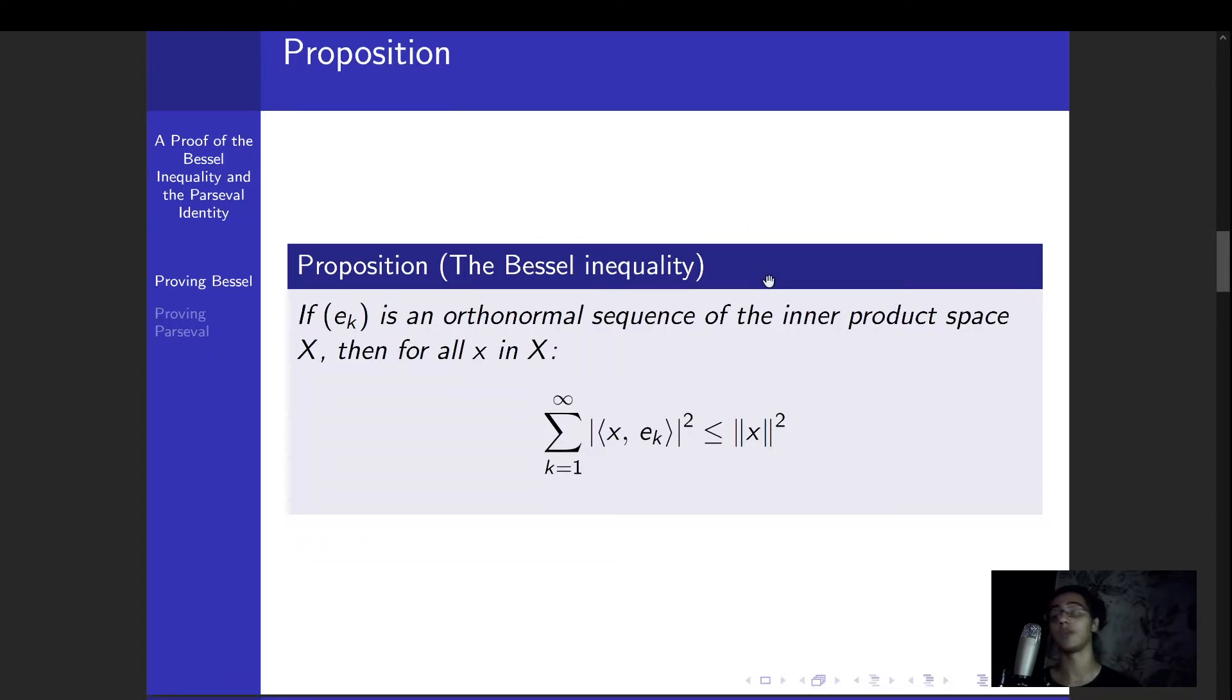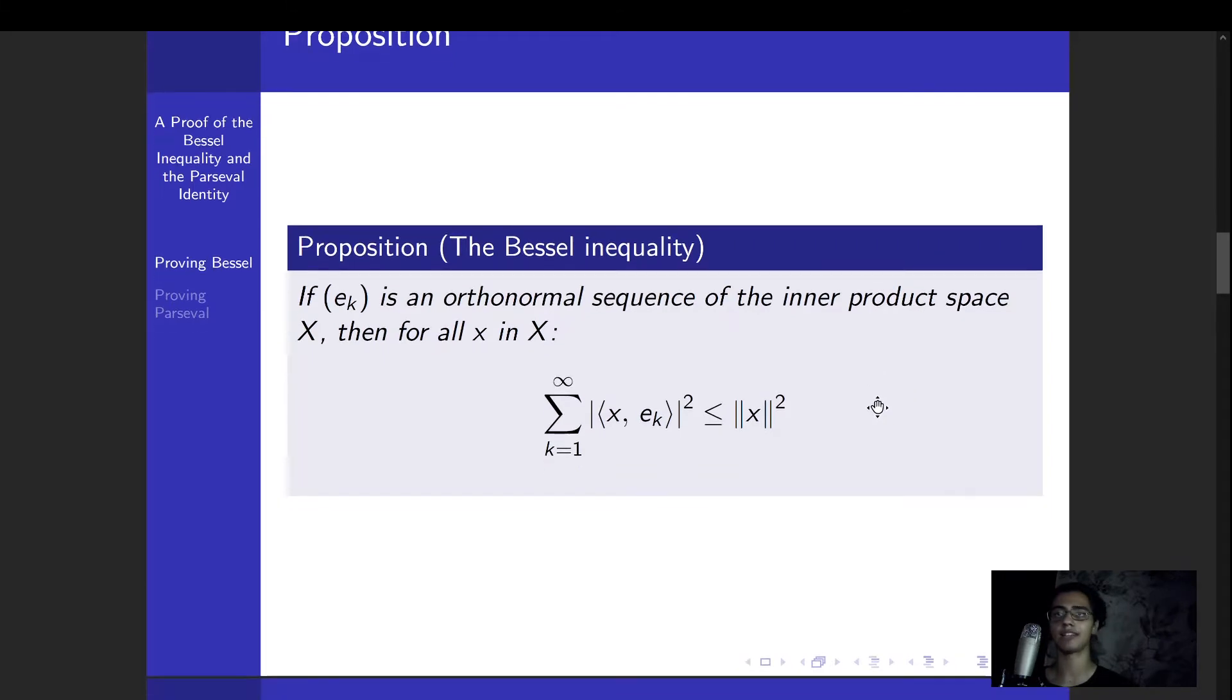And so given only those two hypotheses, we have this inequality here, which is pretty nice because it gives us a bound on what would be the coefficients of an abstract Fourier series of a point x on this vector space.